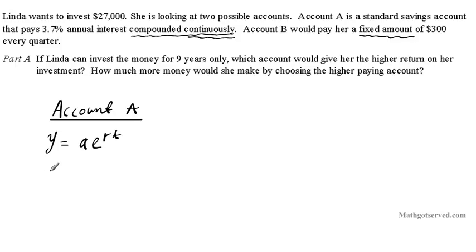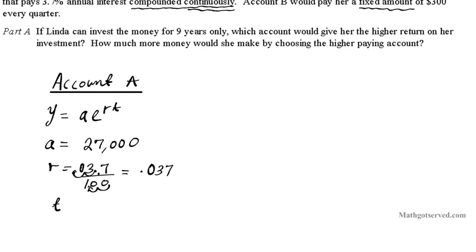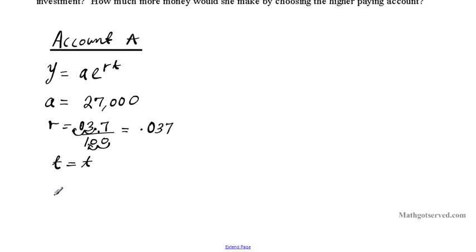So let's plug in the values. We know the initial amount is 27,000. The growth rate is 3.7%, which equals 0.037 in decimal form. And t we do not know yet — that's our variable. So the growth model we're going to be using is y equals 27,000 times e to the 0.037t. This is the growth model for the account that pays continuous interest of 3.7% compounded annually.